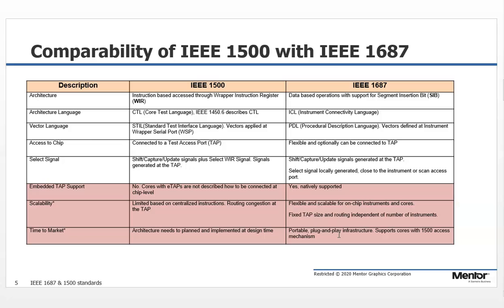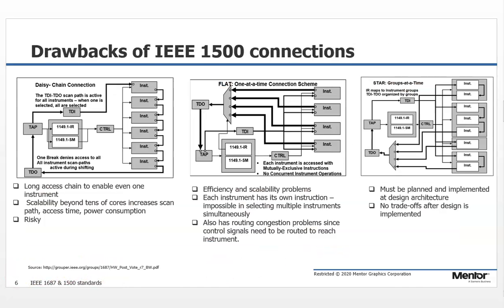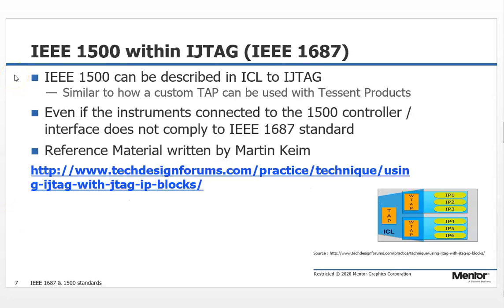IEEE 1687 is portable with a plug-and-play infrastructure and supports cores with a 1500 access mechanism. Some of the drawbacks of 1500 connections include the need to plan how 1500 cores are connected — either daisy-chained one after the other, connected in a star scheme, or accessed as a group using a STAR protocol. When using IEEE 1500 standards, it can be described using ICL to IJTAG, even if the instruments connected below the 1500 do not need to be compliant to the IEEE 1687 standard. There is reference material written by Martin Keim that you can refer to.